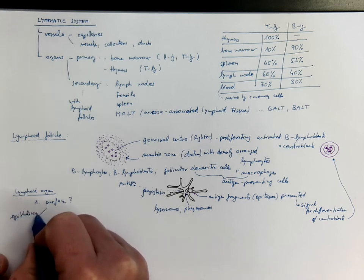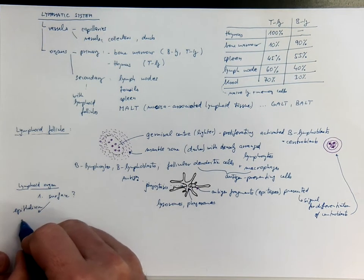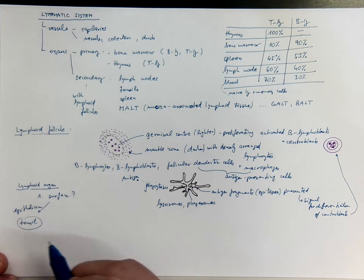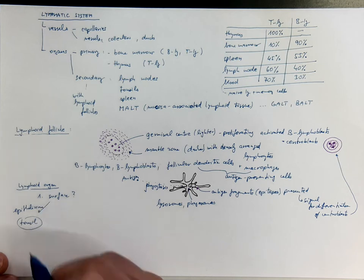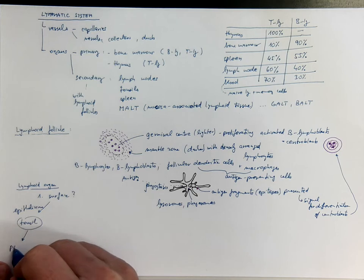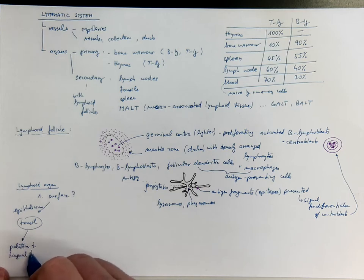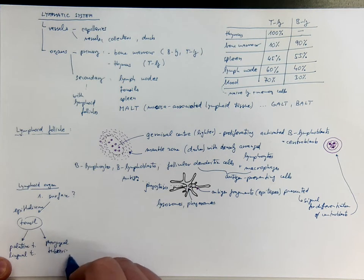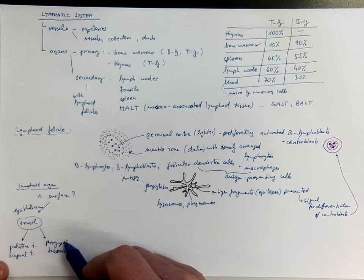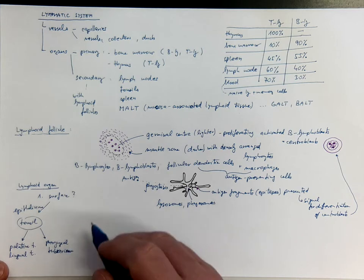If there is epithelium, you can be pretty sure you are looking on some kind of a tonsil. Because only tonsils, as lymphoid organs, have epithelium on the surface because it's a special part of your mucosa. And this could be palatine tonsil or lingual tonsil if there is a stratified squamous non-keratinized epithelium there. Or it could be pharyngeal or tubal tonsil if there is the epithelium of nasopharynx there, that means the pseudostratified columnar ciliated epithelium.